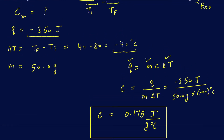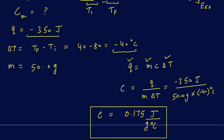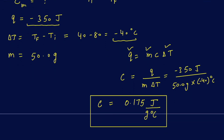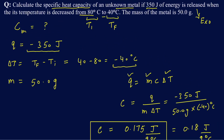Going back to double-check: the maximum number of significant figures here is 2, because 350 has 2 sig figs, and 80 and 40 also have 2 sig figs. So this answer could also be written as 0.18 joules per gram per degree Celsius if you are accounting for sig figs. Hopefully this session was helpful — if you have any questions, feel free to leave comments below.